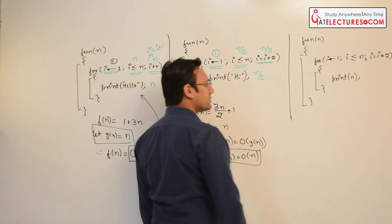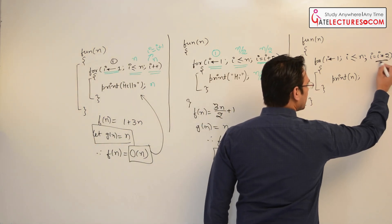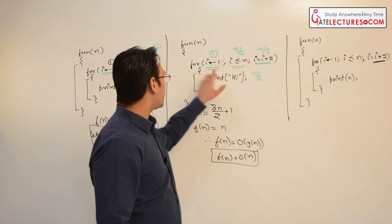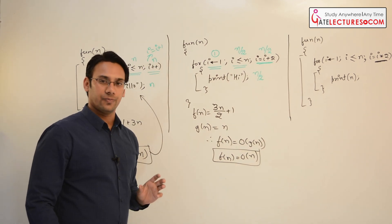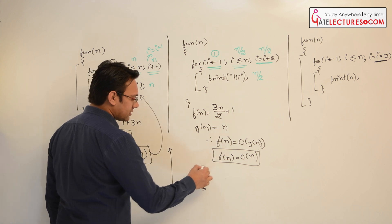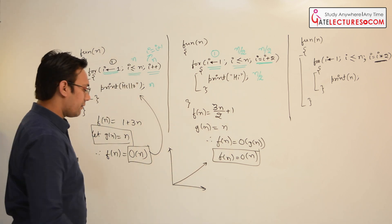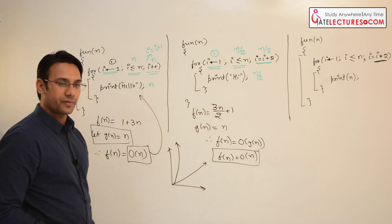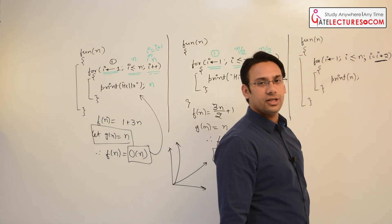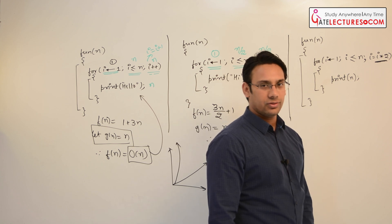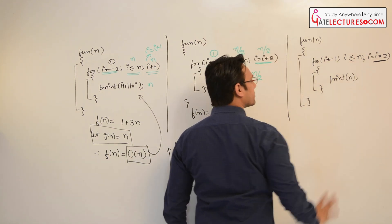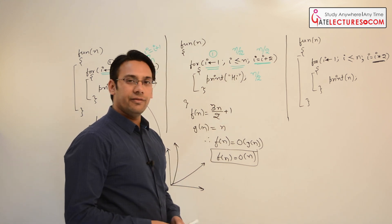Now in the third case, the value of i is growing exponentially — i is being multiplied by 2 each time. Here in the first two cases the value of i was growing linearly, but in this case it is growing exponentially. Linear means the graph grows like a straight line, while exponential means the graph curves upward steeply. Every time we multiply the value of i by 2. We need to identify how many times these statements will be executed.